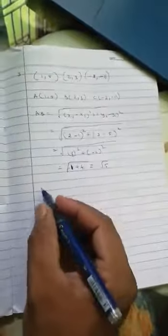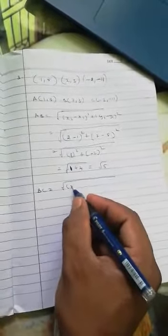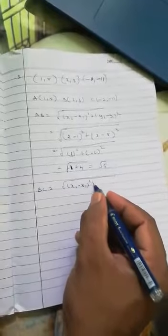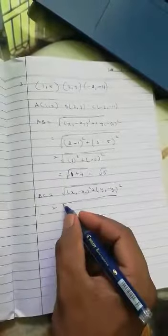Next, after that AB, then we'll find out BC. Same formula: x2 minus x1 whole square plus y2 minus y1 whole square. Here x2 means, now taking B and C, so this is x1, y1, x2, y2.